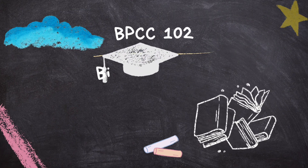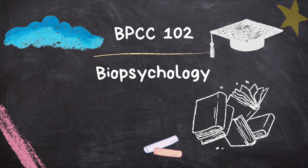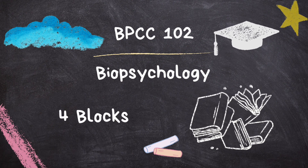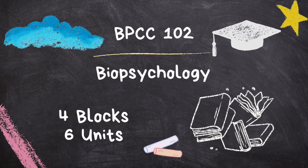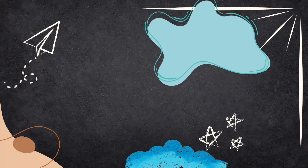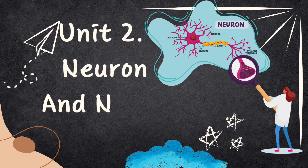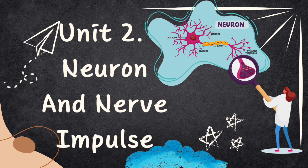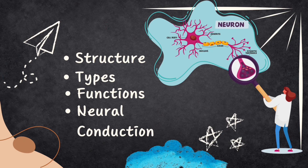This series is about BPCC102, i.e. Biopsychology. It is a core course in the first year of BAPCH and has 4 blocks and 6 units in total. Today's video, we start with the second unit, i.e. Neurons and Nerve Impulse. We will look into the neurons, their structures, types, functions and neural conduction. Let's begin.